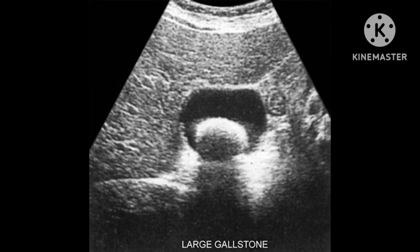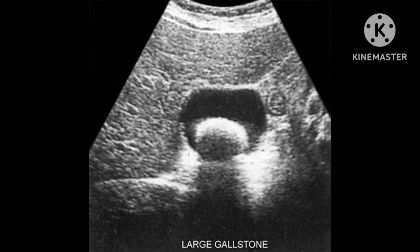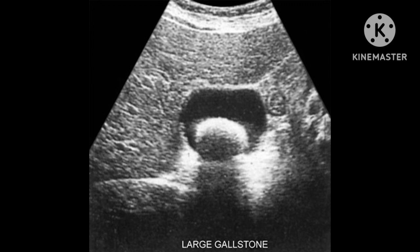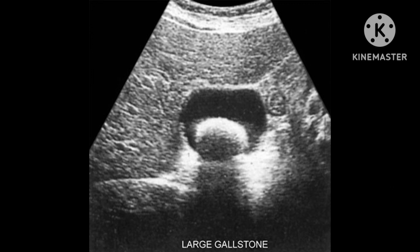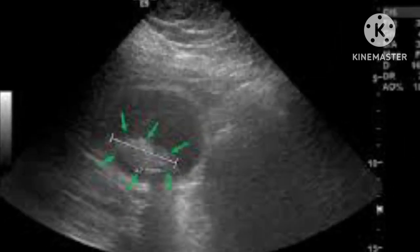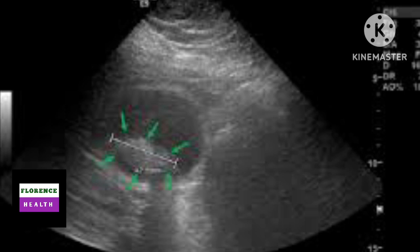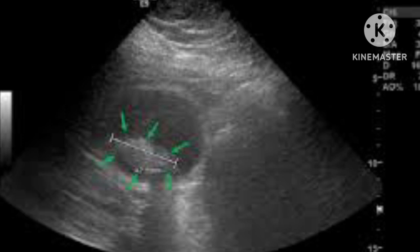This slide shows a transverse section of the gallbladder having an echogenic structure inside. This focus is echogenic, or hyperechoic, or more bright or more white in color, because almost all the ultrasound beams are reflected back from the lesion to the transducer, making the focus more bright or more white in color.